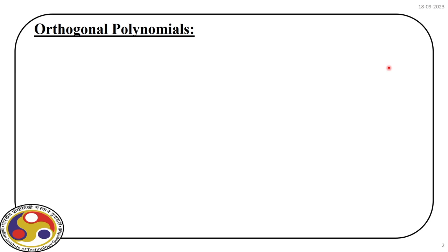When we have orthogonal polynomials, because of their nature we get the advantage of orthogonality, which reduces the computational cost to some extent. That is the motivation behind the use of orthogonal polynomials. We also discussed how to construct them using a technique called Gram-Schmidt orthogonalization.